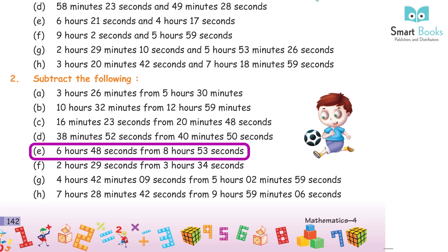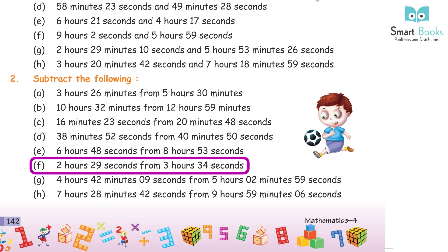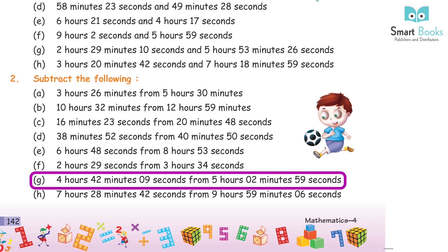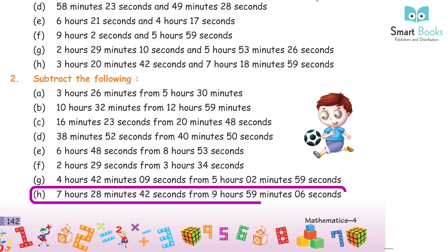E. 6 hours 48 seconds from 8 hours 53 seconds = 2 hours 5 seconds. F. 2 hours 29 seconds from 3 hours 34 seconds = 1 hour 5 seconds. G. 9 hours 42 minutes 9 seconds from 5 hours 2 minutes 59 seconds — wait, corrected: difference = 1 hour 20 minutes 50 seconds. H. 7 hours 28 minutes 42 seconds from 9 hours 59 minutes 6 seconds = 2 hours 30 minutes 24 seconds.